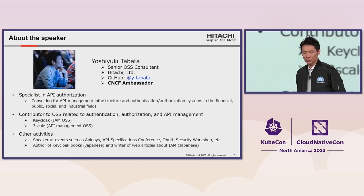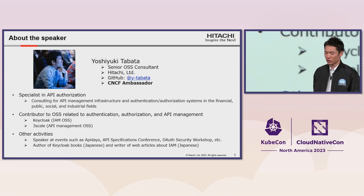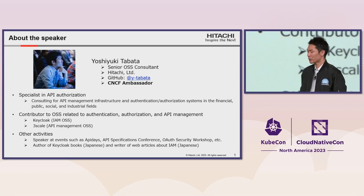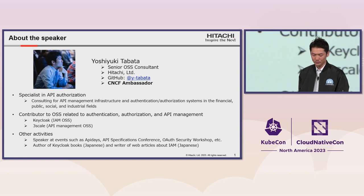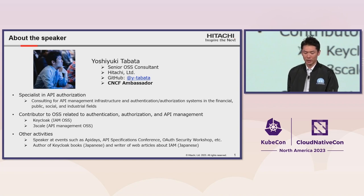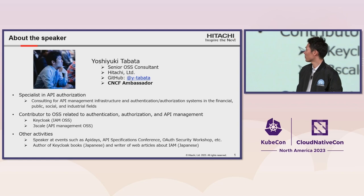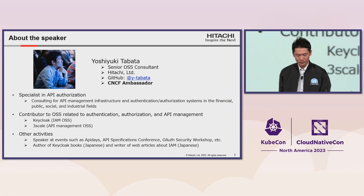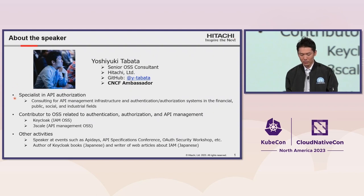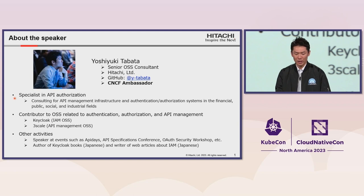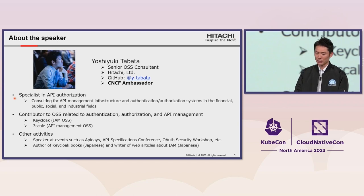First of all, please let me introduce myself. My name is Yoshiki Tabata, and I'm a senior OSS consultant at Hitachi. And I have become a CNCF ambassador this fall. I mainly work as a specialist in API authorization. For example, I consult for API management infrastructure and authentication and authorization systems in the financial, public, social, and industrial fields.